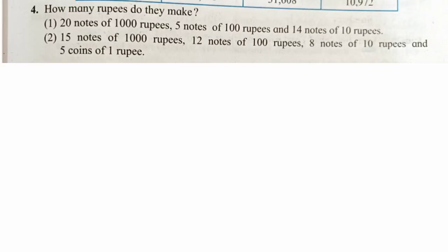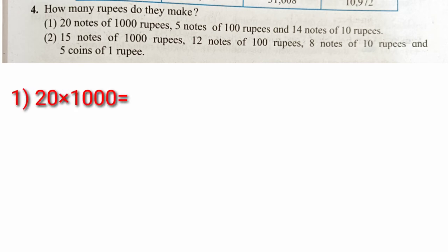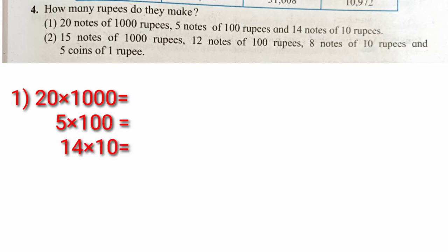Sangamner: ten thousand nine hundred and seventy-two. The next question: how many rupees do they make? Twenty notes of one thousand rupees, five notes of one hundred rupees, and fourteen notes of ten rupees.